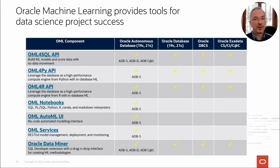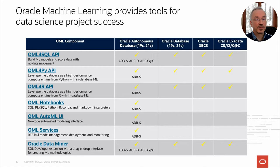Let's take a quick view of the OML family of components. OML provides support for the top three data science languages — SQL, R, and Python. OML Notebooks is a built-in notebook environment on Autonomous Database that supports SQL, PL/SQL, R, Python, Conda, and Markdown interpreters. The OML AutoML UI provides a no-code automated modeling interface with deployment capabilities to OML Services, which provides a REST API for model management, deployment, and monitoring. Oracle Data Miner is a SQL Developer extension, one of OML's first no-code user interfaces. This table captures the platforms where each OML component is available across Autonomous Database and on-premises and cloud Oracle Database.